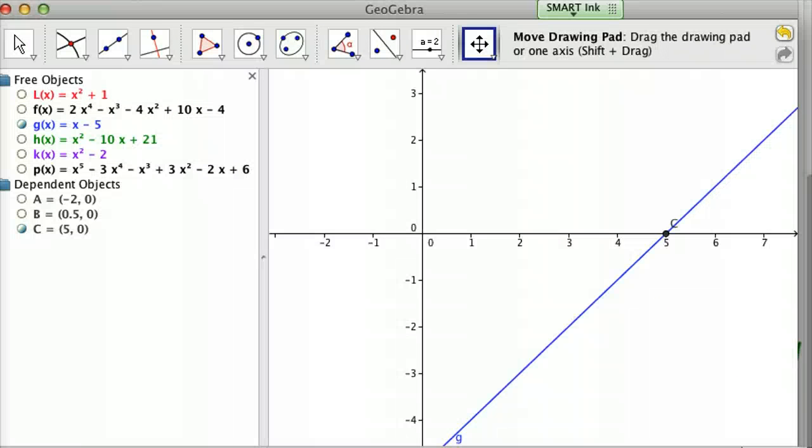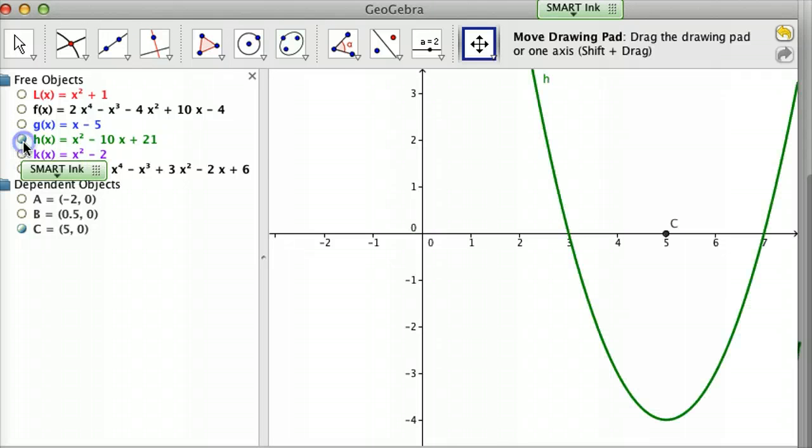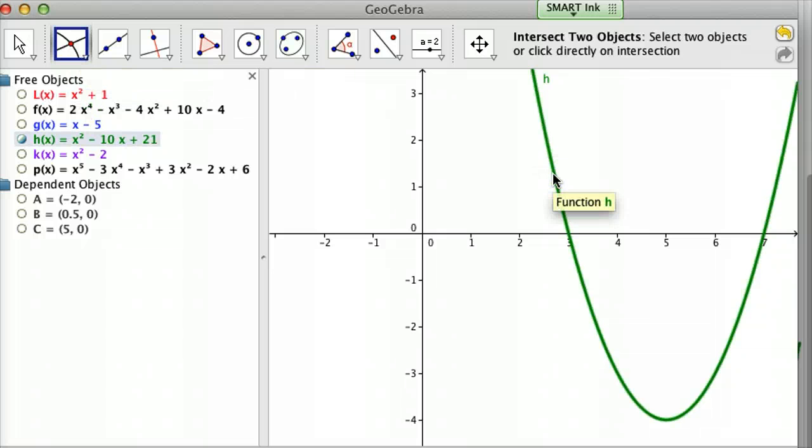In GeoGebra, this is what it looks like graphically. I'll hide that function. Bring up the green function, which is x² - 10x + 21. There it is. Let me hide C there. If I intersect those two objects, the function and the x-intercept, notice it pumps out D and E, which are your (3,0) and (7,0), your two x-intercepts. There you can verify it with a graph.